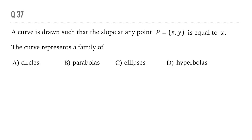Take a moment to read the question. A curve is drawn such that the slope at any point is equal to the x coordinate at that point. What does this curve represent? How do we do this question?